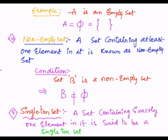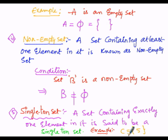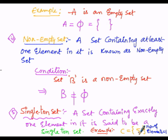Let us consider one example. Consider set C = {5}. There is only one element, that is 5, so it is a singleton set. The number of elements present in this set is 1 — that is, only the element 5. Hence it is called a singleton set.